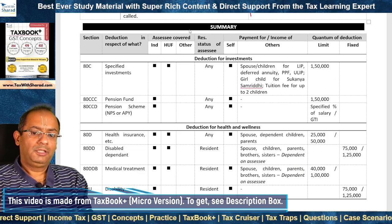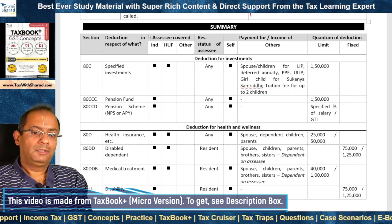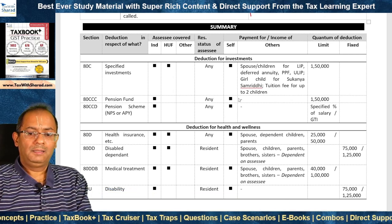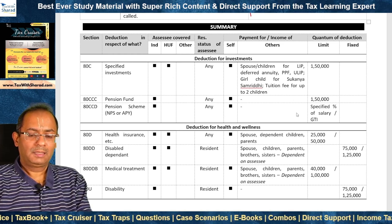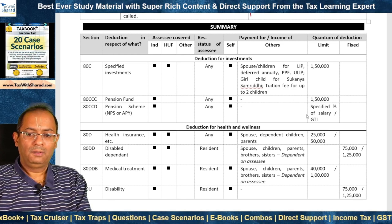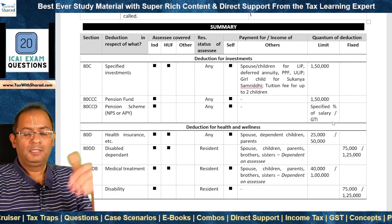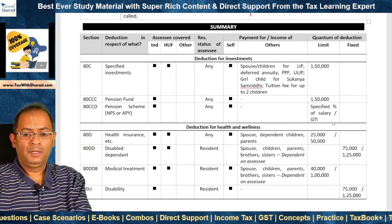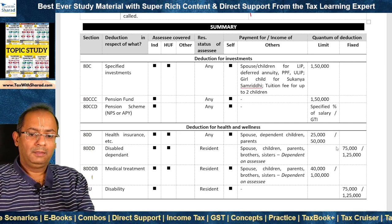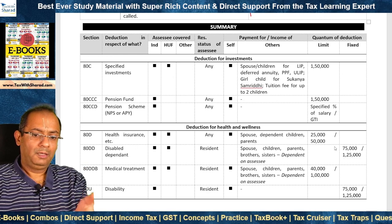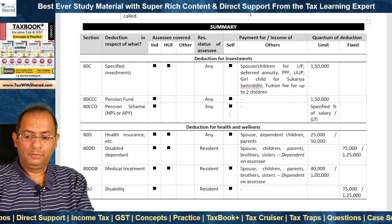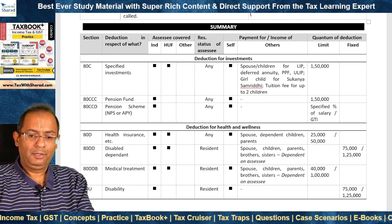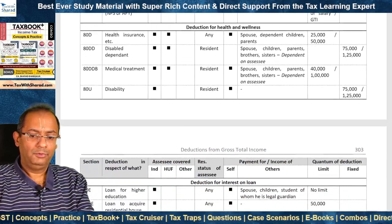Finally, there is a summary available which gives a very compact and condensed snapshot of all the provisions discussed in this topic on deductions from gross total income. Since we have already discussed those provisions, you can take a look at this summary at your own end from the Tax Book — it will be very useful to you.